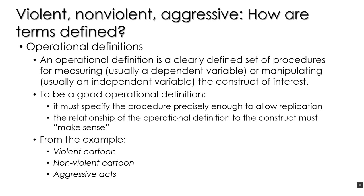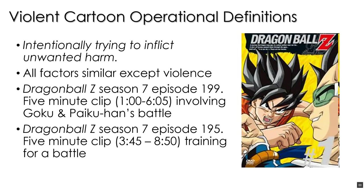The relationship between the operational definition and the construct must make sense — there should be a reasonable and logical connection between constructs, such as violent cartoons and the cartoons actually being watched, or aggressive acts and the acts being recorded as aggressive in the experiment. For the independent variable, the researchers used the idea of intentionally trying to inflict unwanted harm as the operational definition of violence.